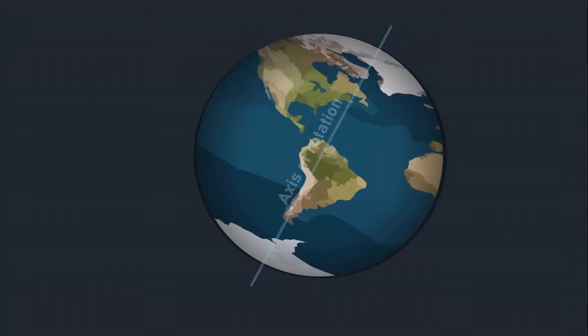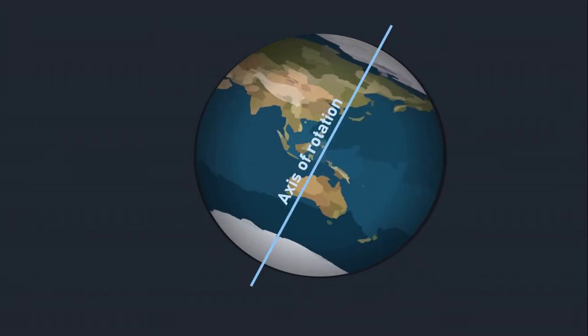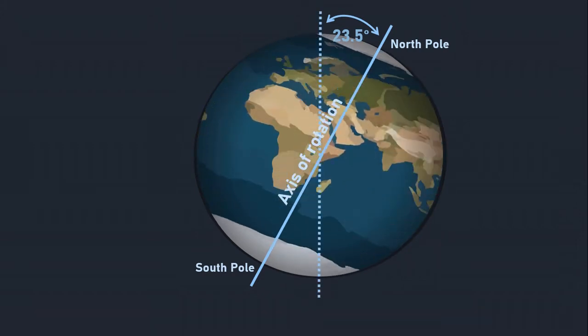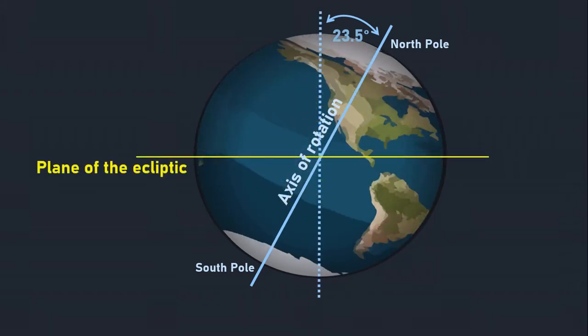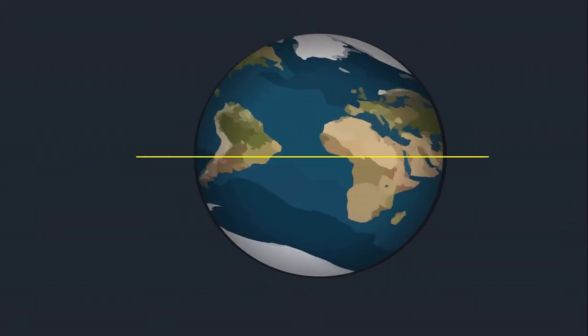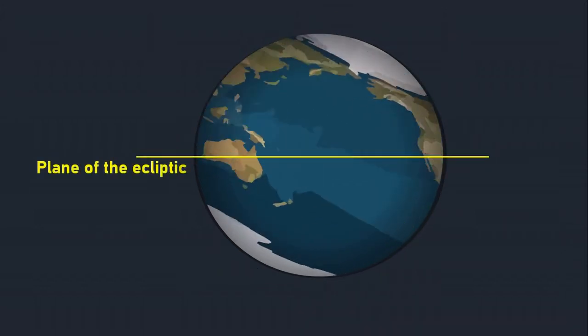The Earth's axis of rotation passes through both poles and has a tilt angle of 23.5 degrees. This tilt is calculated from the perpendicular line through the plane of the ecliptic. The plane of the ecliptic is the imaginary horizontal plane on which Earth revolves around the Sun.